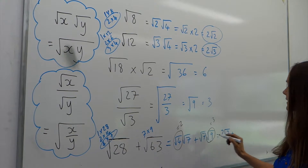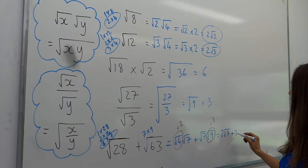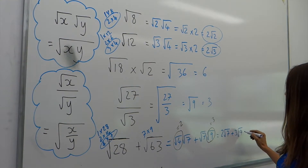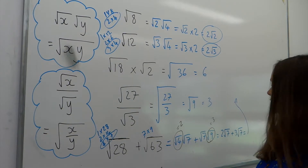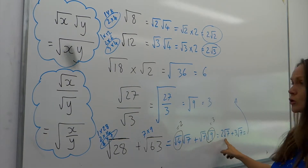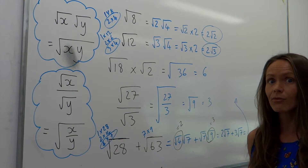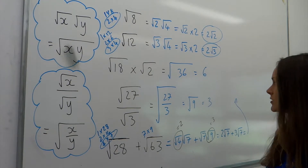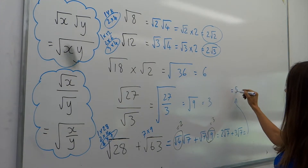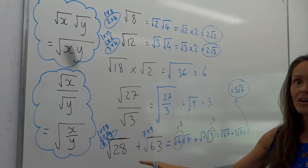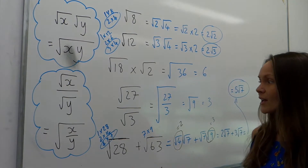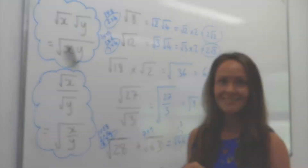Not forgetting we're adding them together. We can add those two terms: if we have two root 7s and add three more root 7s, that gives us five root 7. So there's the final answer.